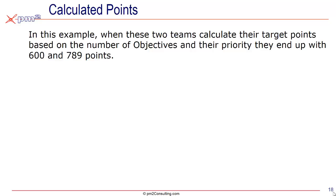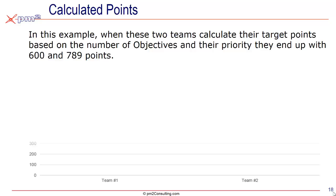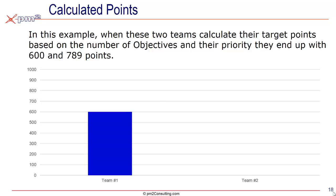So if we were to allocate points on the work that they could get done if they achieved all their objectives, it's possible that one team will only earn 600 points and the other one some other number — let's say 789. And again, it's not that they necessarily have a significant difference in resources or objectives or overall expectations, but for that particular period, based on the mix of work they're doing, there's less points at play.